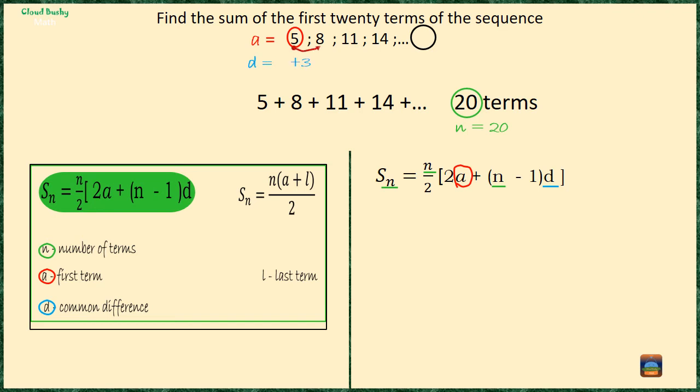Each time we want the next term we add 3, so we can write: the sum of the first 20 terms equals 20/2 times [2 times 5 plus (20 minus 1) times 3].